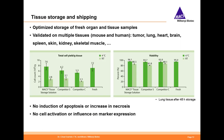The MACS Tissue Storage Solution has been developed to allow optimized storage of fresh organ and tissue samples. It has been tested and validated on a variety of human and mouse tissues, including tumors, lung, heart, brain, spleen, skin, kidney, and skeletal muscle. This graph shows the number of cells per gram of tissue recovered after storage in different solutions for 48 hours at 4°C or room temperature, compared to fresh tissue. And this graph shows the viability of cells in the same conditions. Tissues stored in MACS Tissue Storage Solution at 4°C maintain the original cellular yield and viability, even after 48 hours, with no induction of apoptosis or increased necrosis, and no cell activation or influence on marker expression.